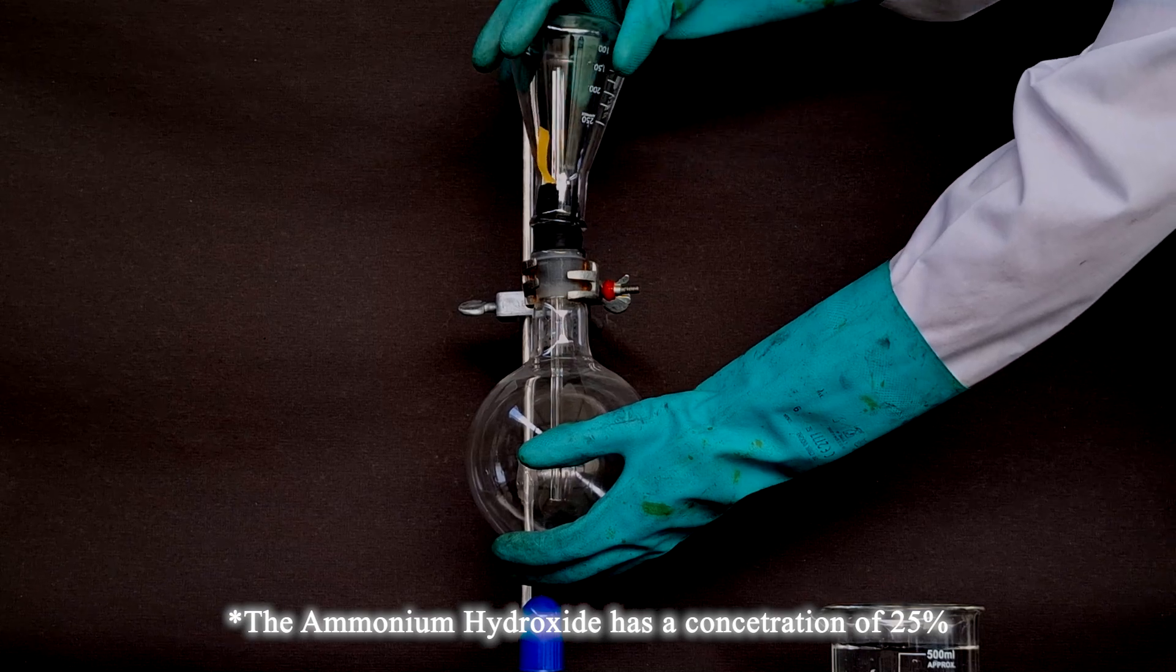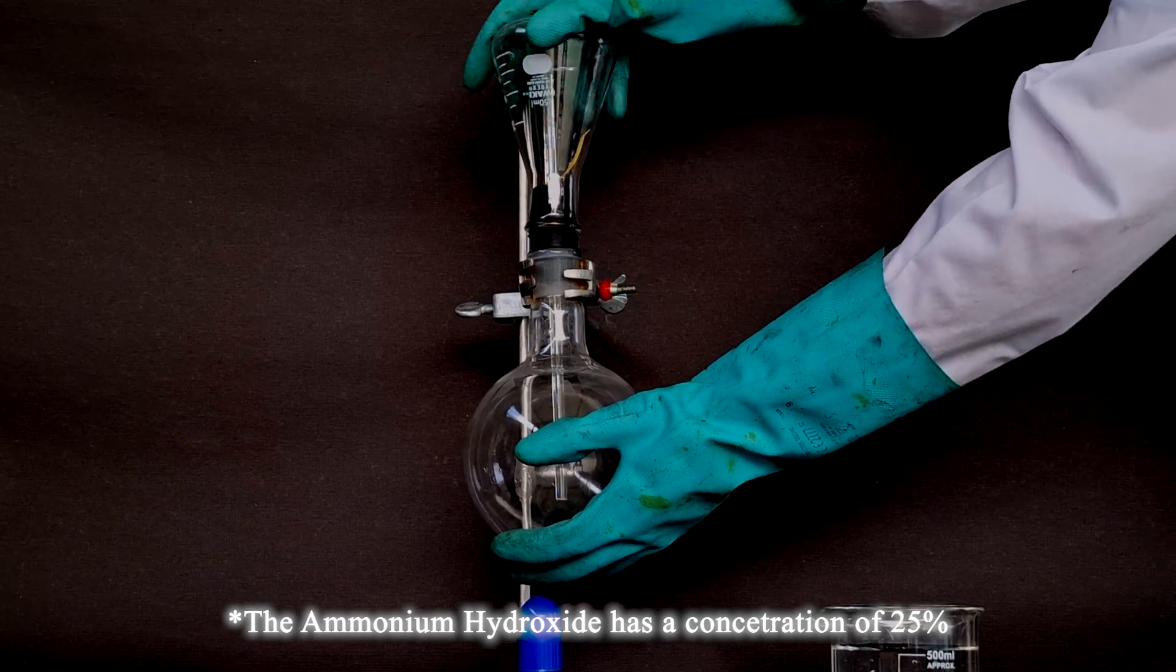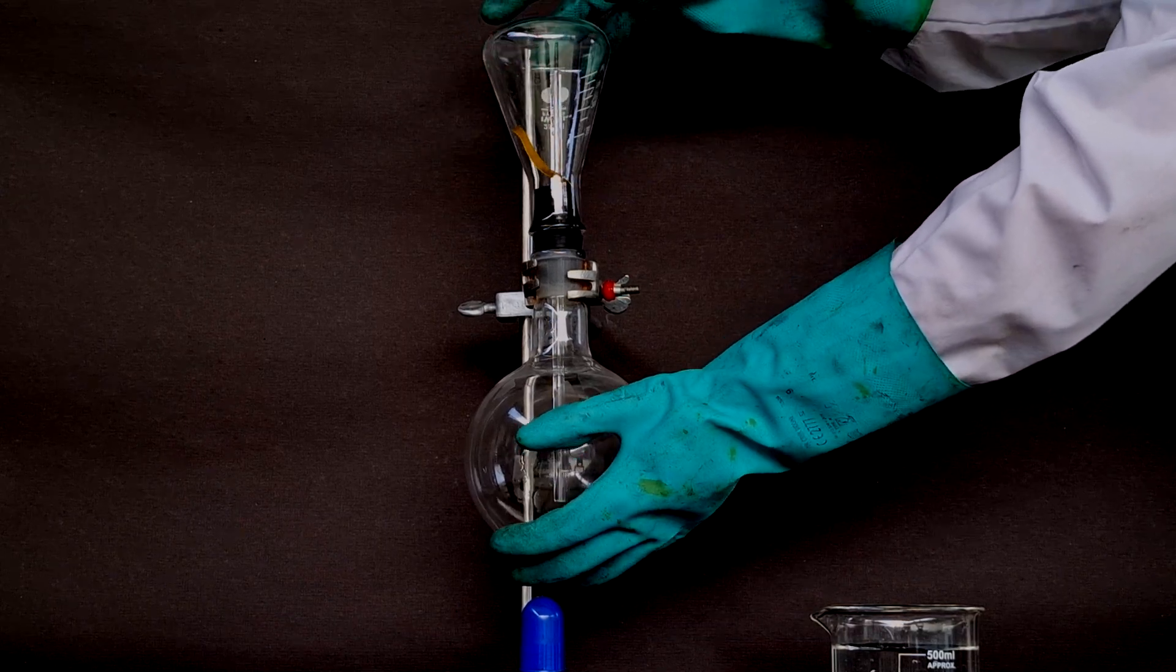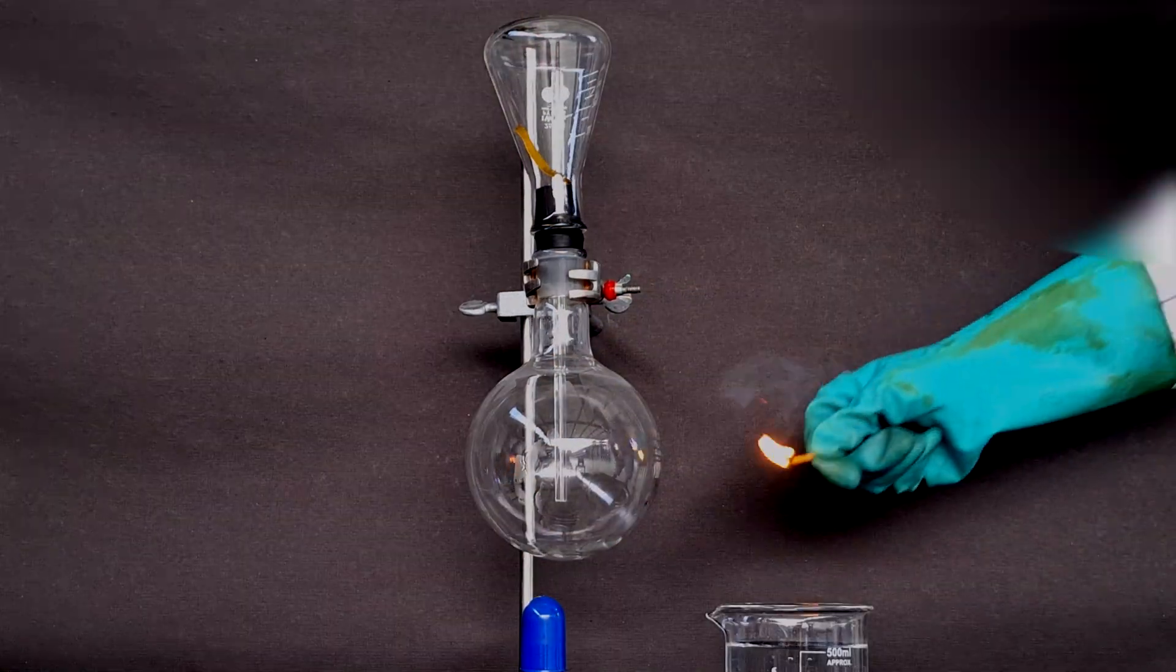An Erlenmeyer flask is attached above the round bottom. This is where the fountain will take place. I also added an indicator paper inside the flask to indicate the presence of ammonia gas.